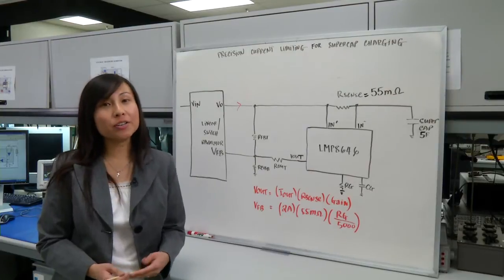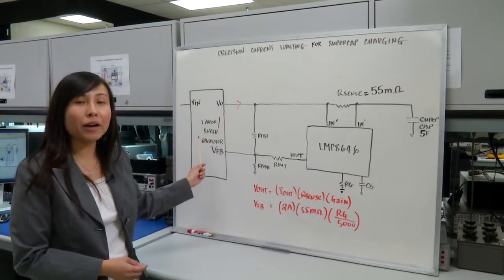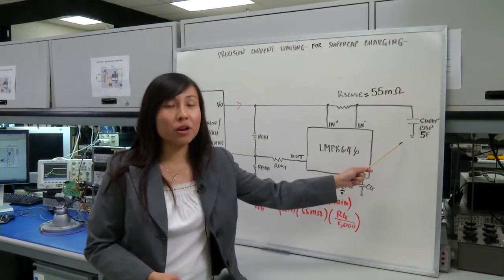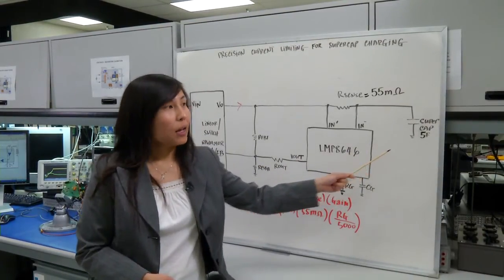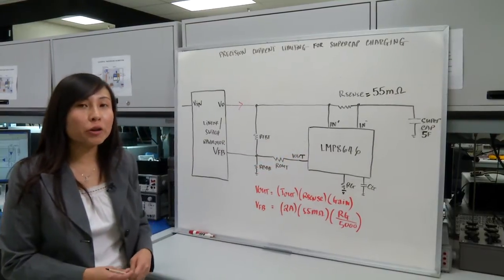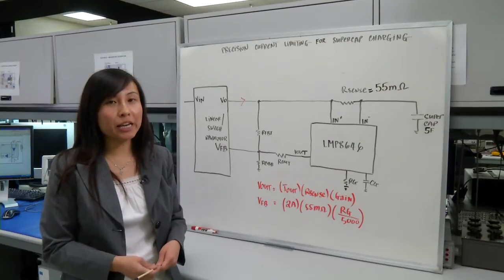So the challenge is sometimes you have an output current out of a regulator and you want to charge a supercapacitor of, let's say, 5 farads. In this case you want to have some kind of circuit in order to monitor or to precisely current limit your application.